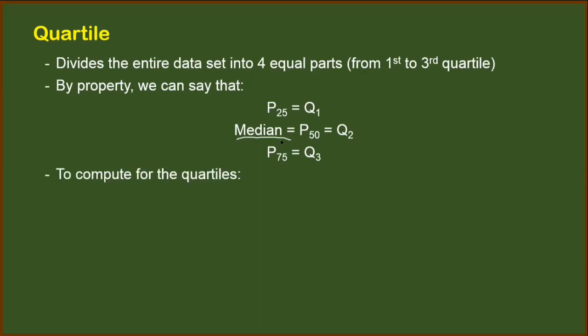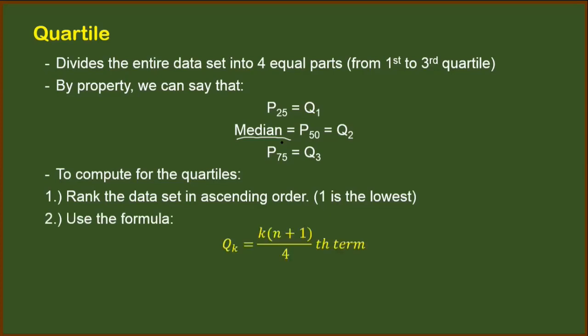In order for us to identify the different quartiles from the first up to the third quartile, we will first rank the dataset in ascending order, meaning we will assign ordinal numbers from 1 as the lowest onwards. Afterwards, after ranking, we will use this formula.